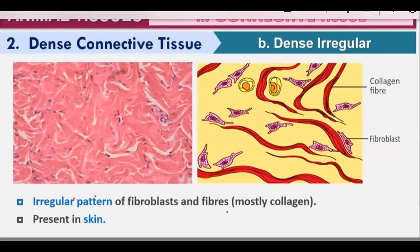Dense irregular connective tissue has an irregular pattern of fibroblasts and fibers.